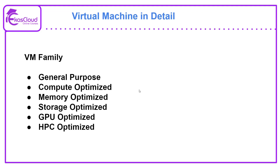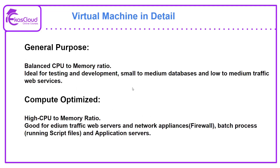VM family is categorized into the following options: general purpose, compute optimized, memory optimized, storage optimized, GPU optimized, and HPC optimized. For general purpose scenarios, we use a balanced CPU to memory ratio. These are low cost and ideal for testing and development, small to medium databases, and when there is not much traffic for web services.